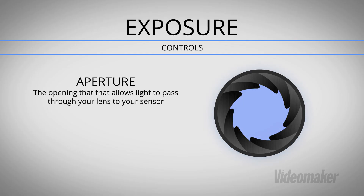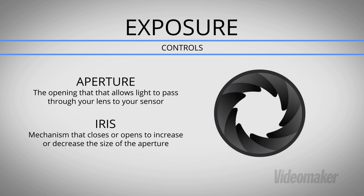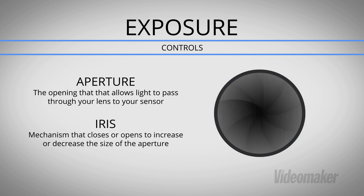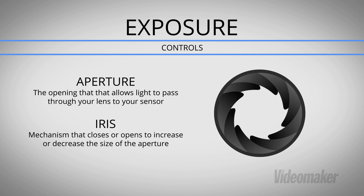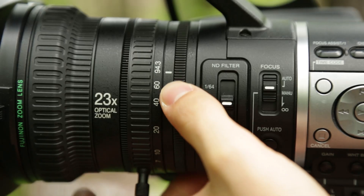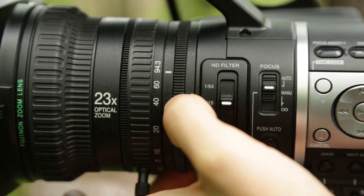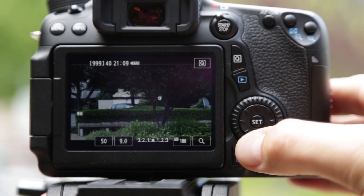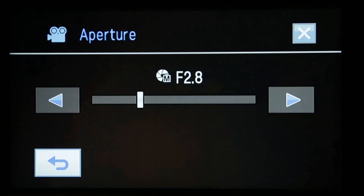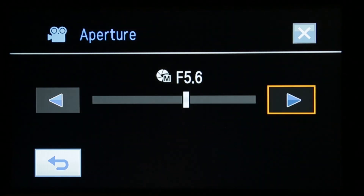Understanding your aperture and how to use it is a primary skill that every shooter should understand. Aperture is the opening that lets light pass through your lens to your sensor. The iris is the series of blades that open and close to make your aperture larger or smaller. The iris can be controlled by a ring on your lens, a dial on the side of your camera, or by accessing a menu system on your camera.